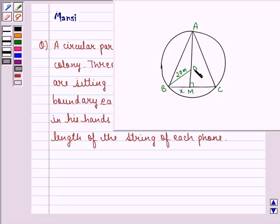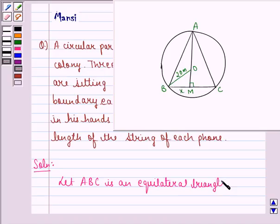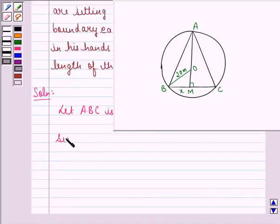Now, OB being the radius of this circular park is equal to 20 meter. So, let us start with the solution to this question. Let ABC is an equilateral triangle of side 2x meters.